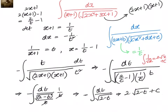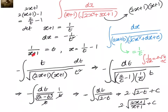Let us go back and substitute 2 minus t, where t is 1 by (x plus 1). When we simplify, we get 2 root of (2x plus 1) divided by (x plus 1) plus c. We know t equals 1 by (x plus 1), so 2 minus 1 by (x plus 1) gives 2x plus 2 minus 1, that is 2x plus 1, over denominator x plus 1.